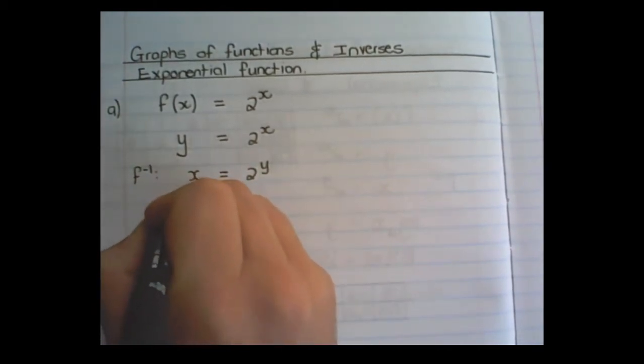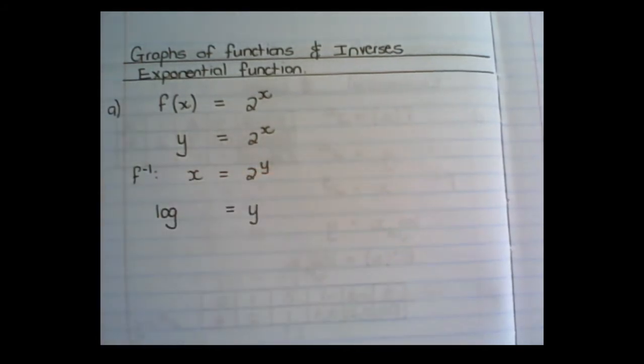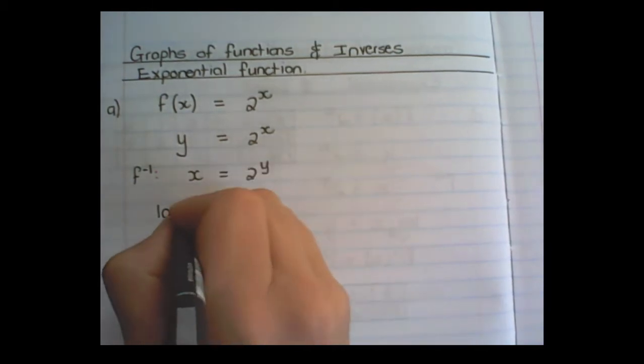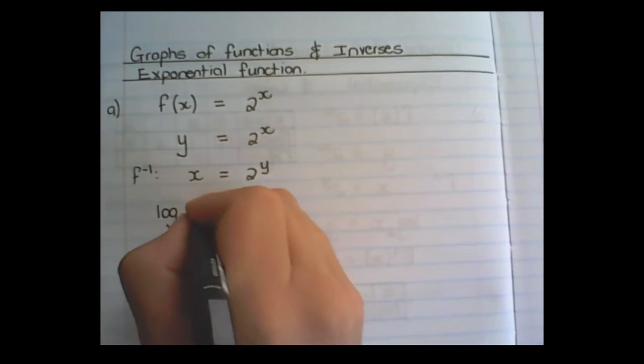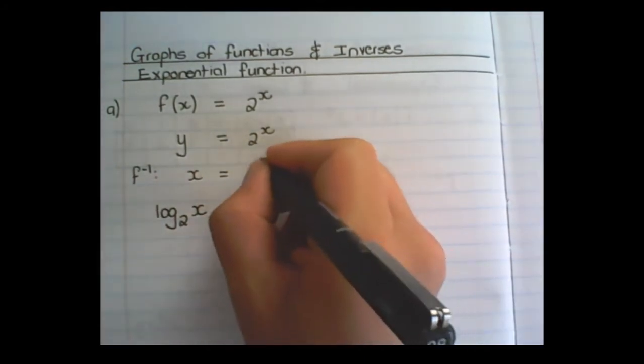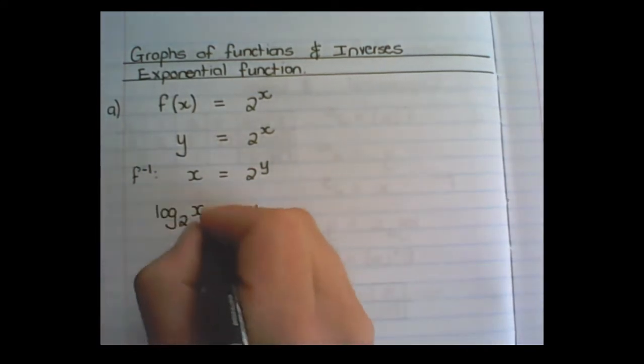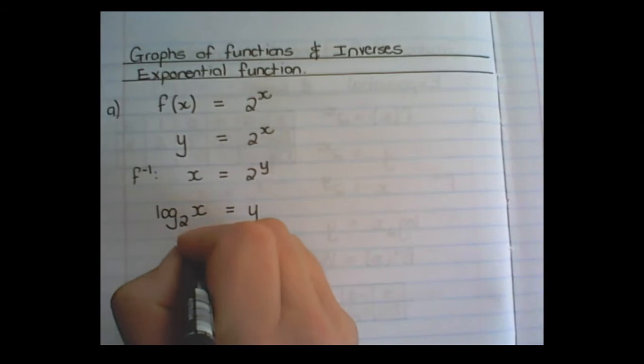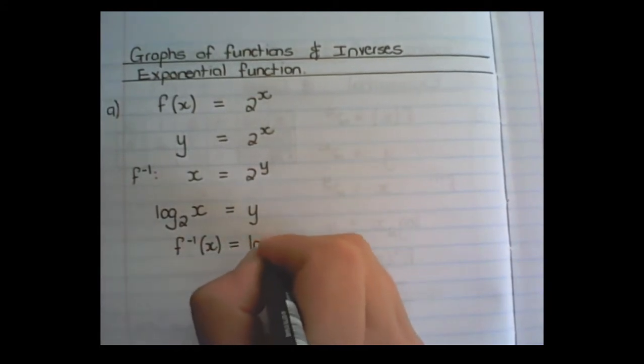And what we have learned in the previous videos is how to use logs when it's an exponential function. So the base of the exponent becomes the base in the log and the x becomes part of the answer. The actual exponent becomes the answer for this equation. And our last step was to rewrite y in the proper notation.